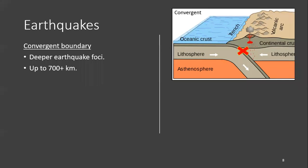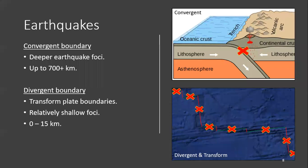Earthquakes within a subduction zone along a convergent boundary tend to occur deep. As the subducting plate sinks deep into the earth, areas become locked. However, as plate motion continues, the elastic strain accumulates until it's released in the form of an earthquake. At divergent boundaries and transform plate boundaries, earthquakes are relatively shallow because the brittle crust is relatively thin and underlain by partially molten material where stress cannot accumulate.